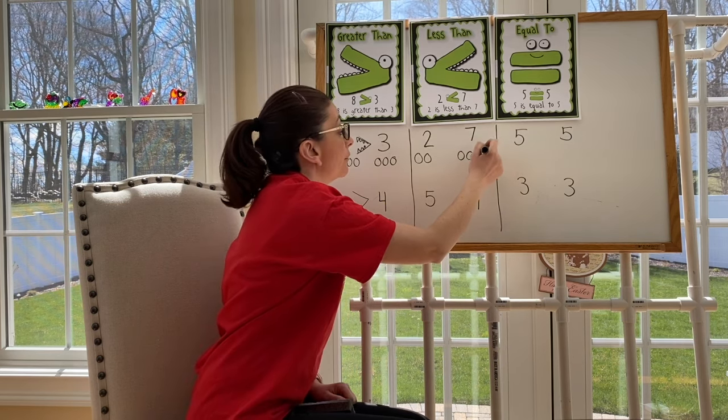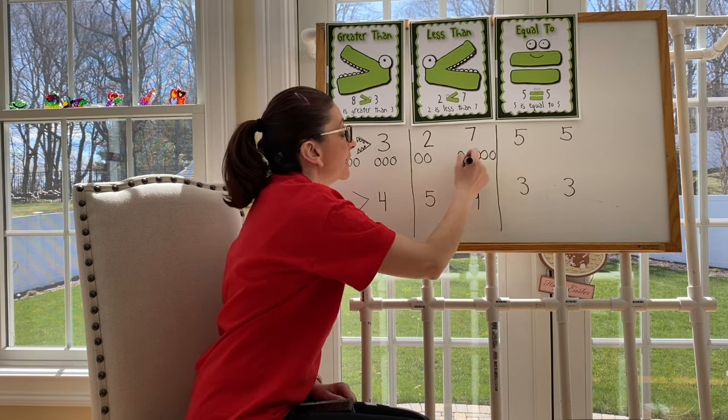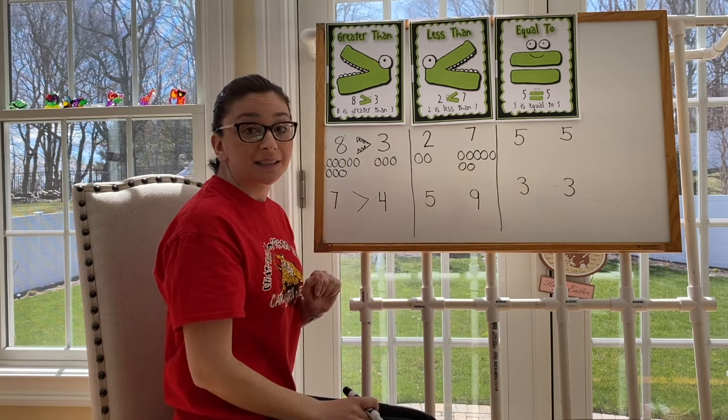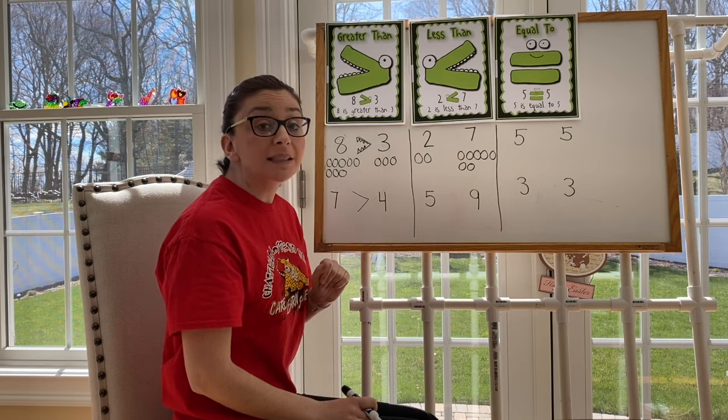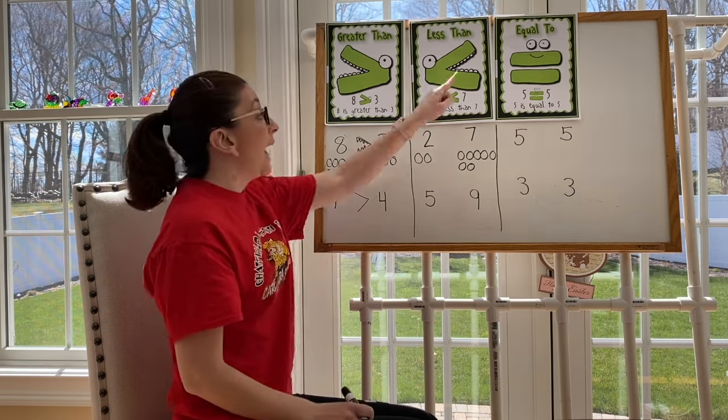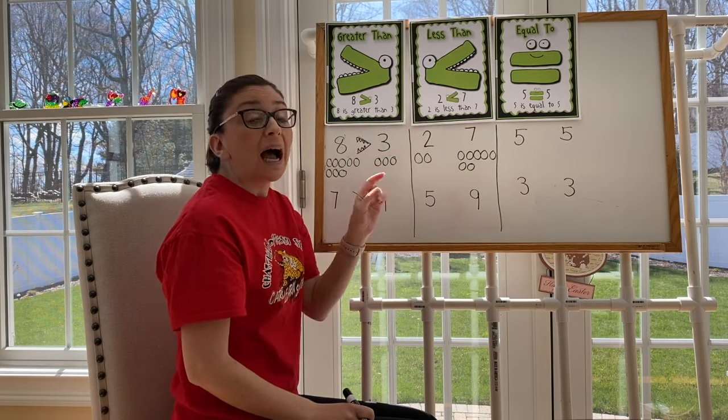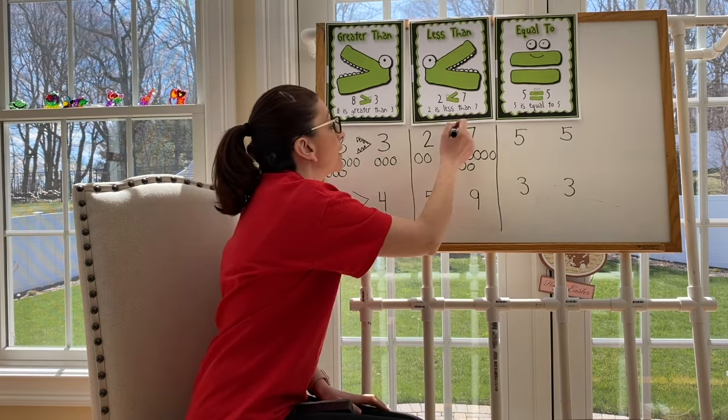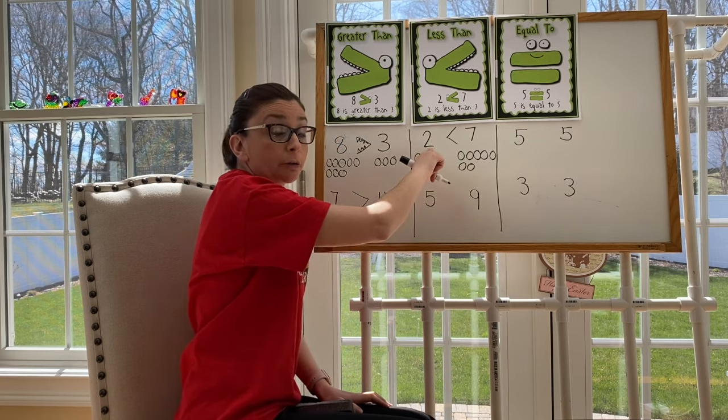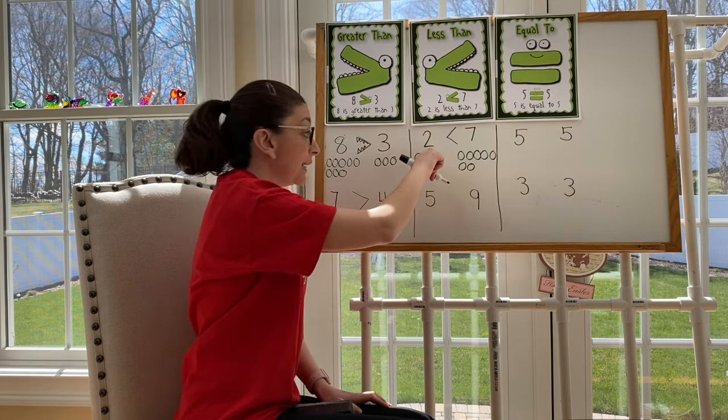One, two, three, four, five, six, seven. Which number is less? Two is less. When I'm talking about a number that is less and I'm using my arrows, I need to make sure the small part of my arrow faces the smaller number, the number that is less.